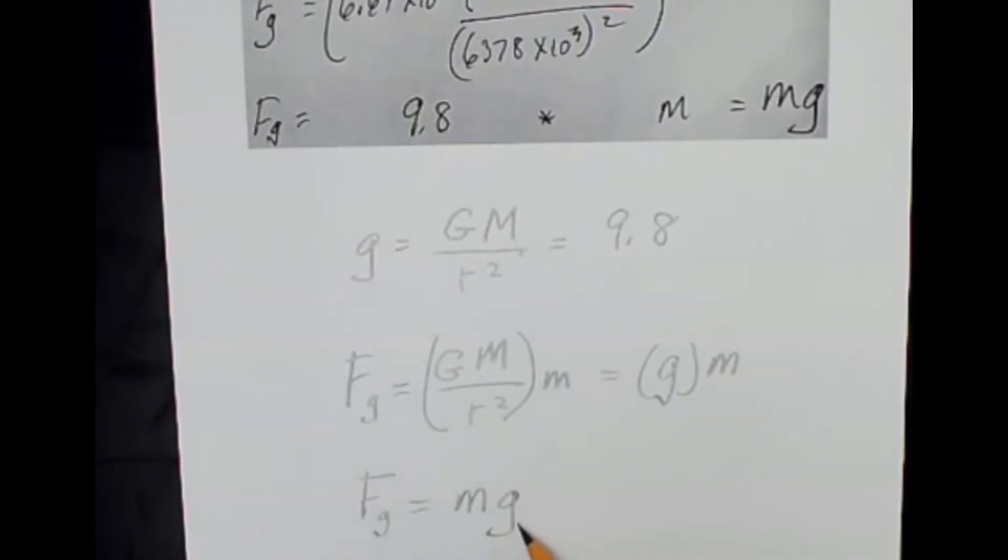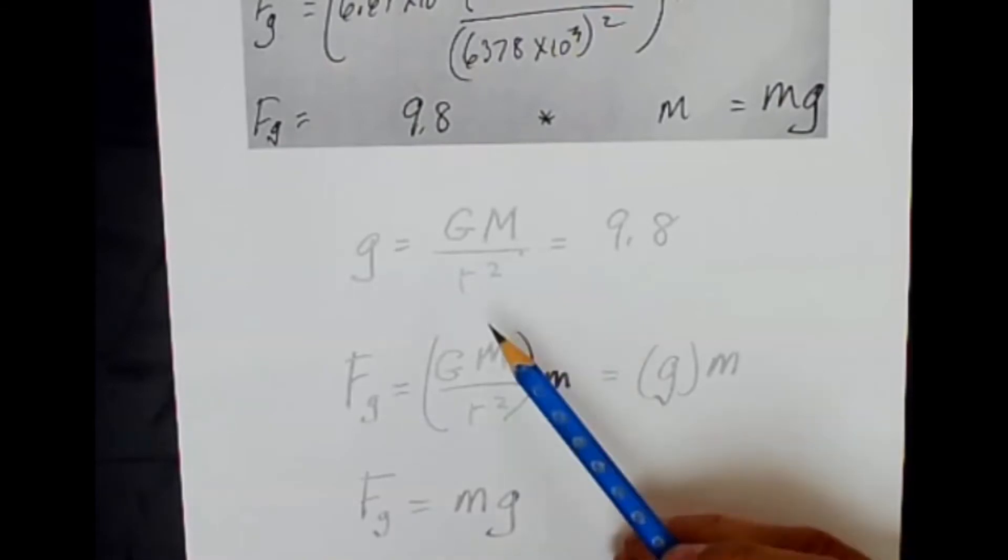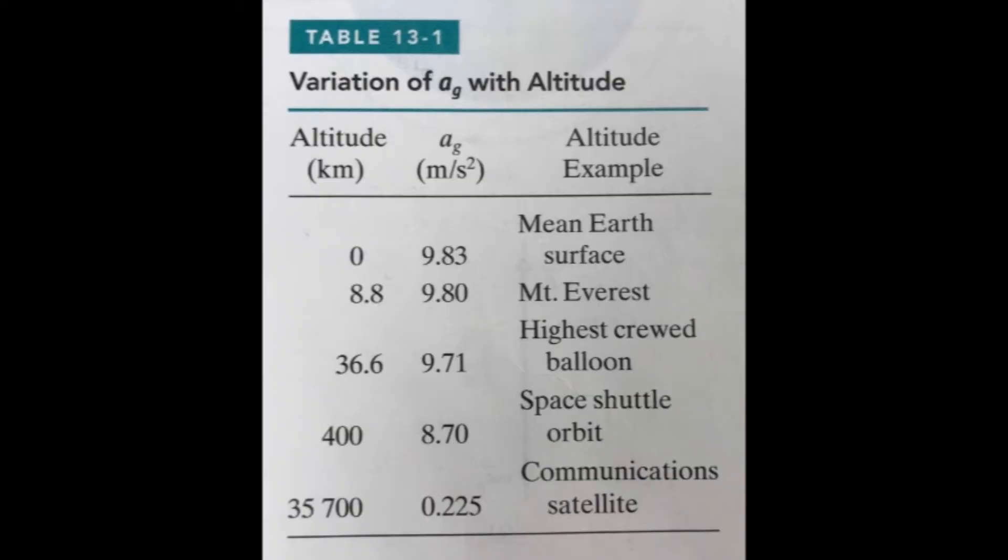And you see that for pretty much anywhere we go on the surface of the Earth, the value of r does not change by very much percentage-wise. So whether we're standing on the top of Mount Everest or at the bottom of Death Valley, it's always very close to a value of 9.8 meters per second squared.